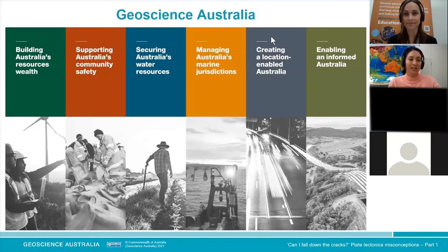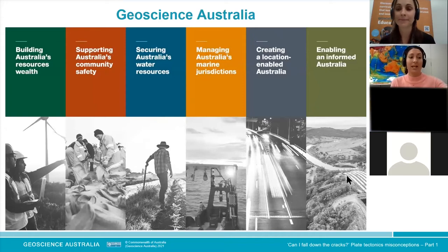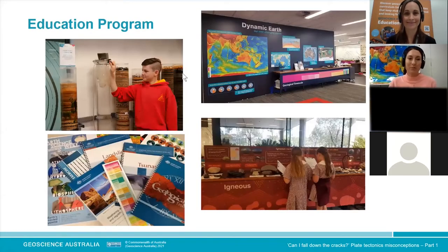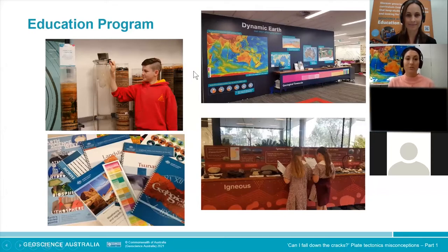Geoscience Australia is Australia's national geological survey and we provide geographical and geological information for the nation. We're situated in Canberra. There are about 600 of us in this building. Louise and I work for the education program here. You can see in the top left-hand corner the bread and butter of what we do — seeing students in person — with a picture of a student pouring sediment into columns.